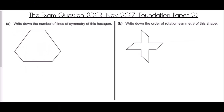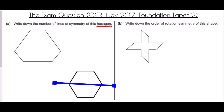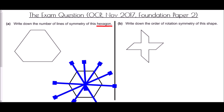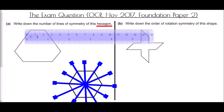We come to the exam question from the OCR paper in November 2017, Foundation Paper 2. We're asked to write down the number of lines of symmetry of this hexagon. This is a bit of a trick question — when we think of a hexagon, we normally picture a regular hexagon, which has six lines of symmetry. But this one is not a regular hexagon, so we need to check the lengths of its sides to see what we're dealing with.